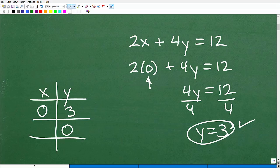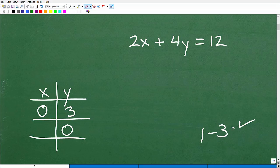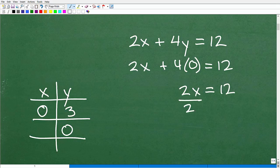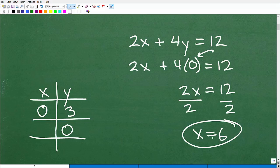All right. So we plugged in zero for x and we got a y. Now we want to do the exact same thing. But this time, we're going to plug in zero for y and get our x. So let's do that now. So that's going to be 2x plus 4. We'll plug in the zero for y and we want to get x is equal to 12. Again, four times zero is just going to be zero. So this equation here is just going to be 2x is equal to 12. And then I'm going to divide both sides of the equation by two. And I get x is equal to six.